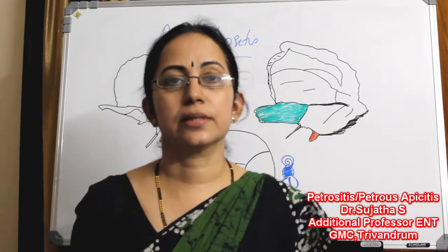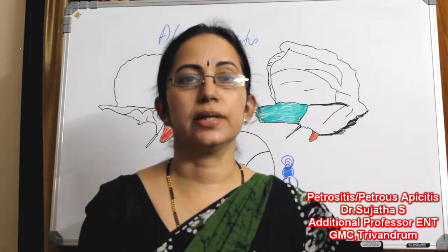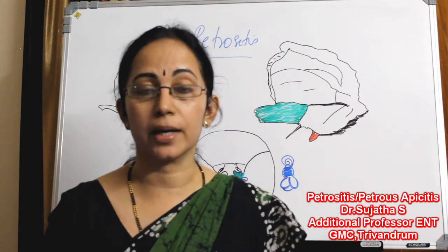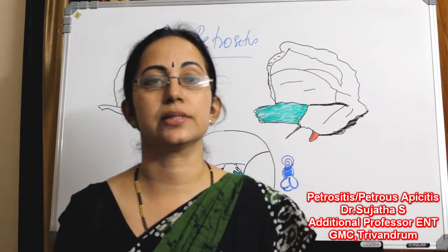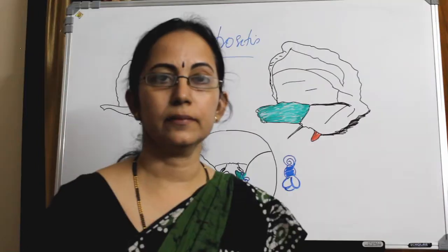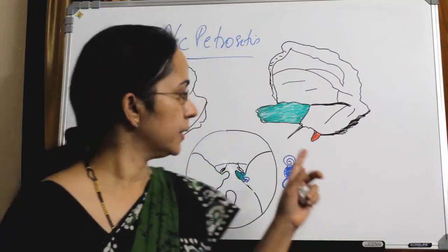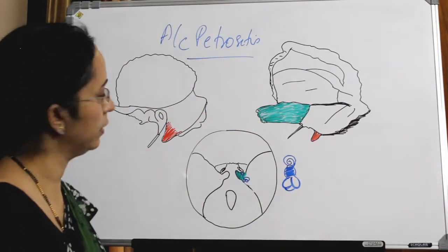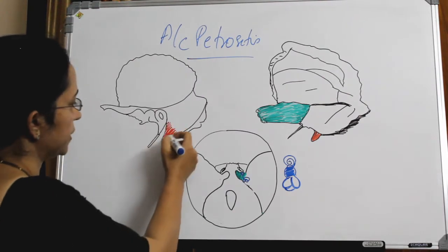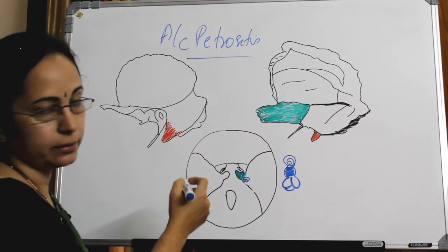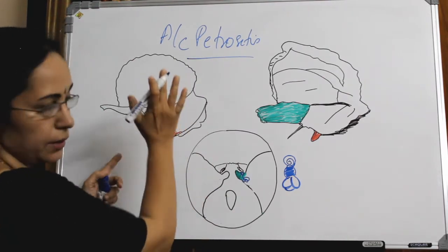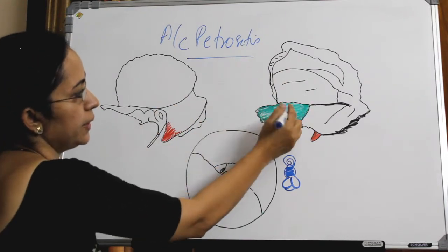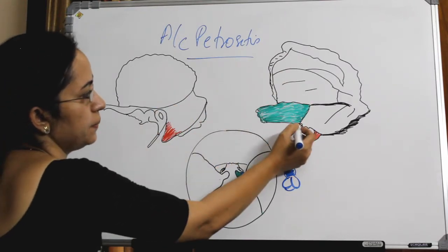This occurs usually as a complication of coalescent mastoiditis or cholesteatoma. This is a diagram of the temporal bone. You can see the mastoid part here from the lateral view, and on the medial side this is the petrous part.